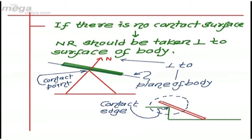In a previous example where there was a stair and a rod was kept against it, we draw the normal reaction at this contact. There is no contact surface, only a contact edge. So what we do is draw the plane of the body — which is along this line — and normal reaction must be perpendicular to it. So I will draw normal reaction perpendicular to this rod for this contact.